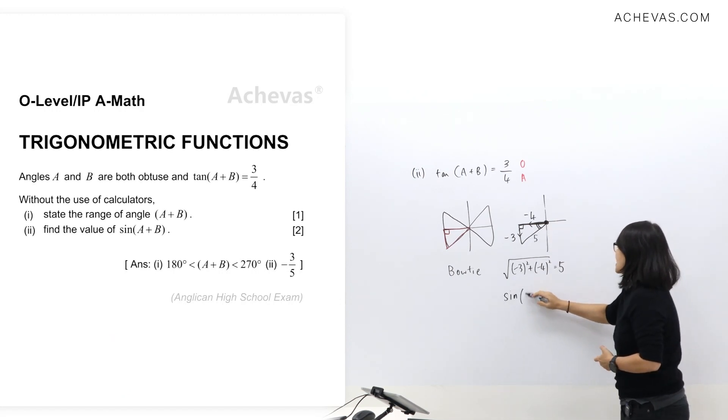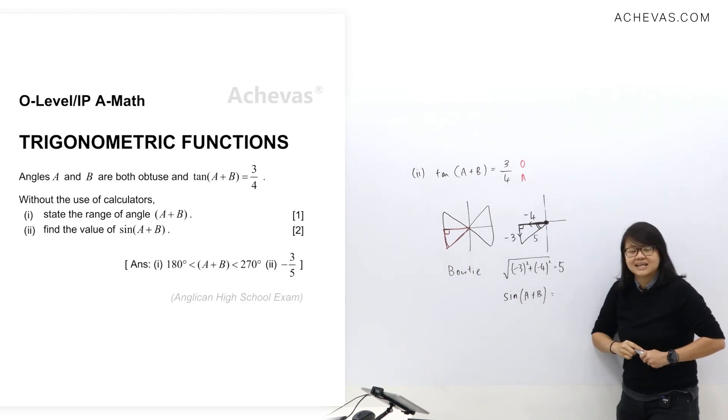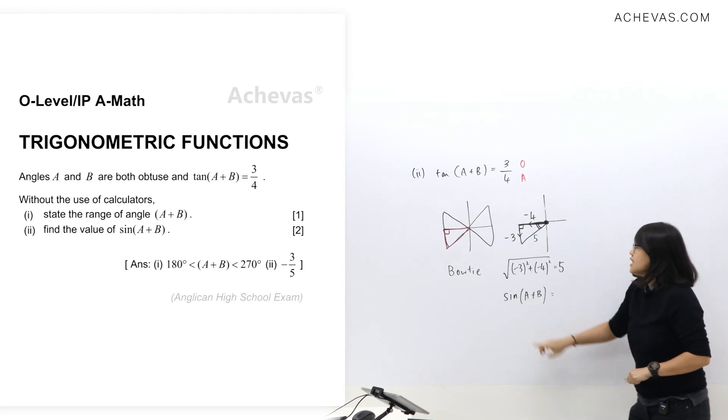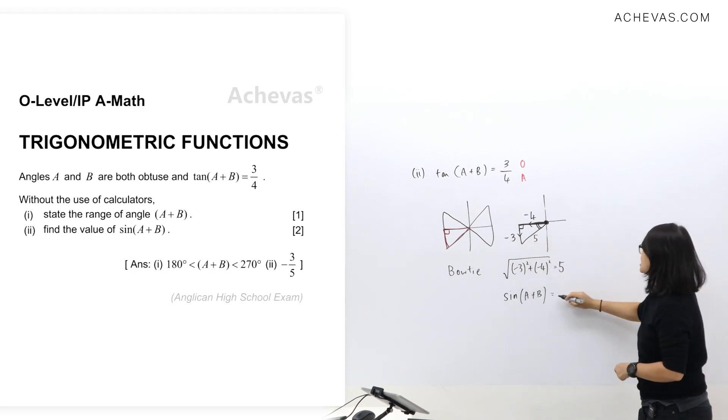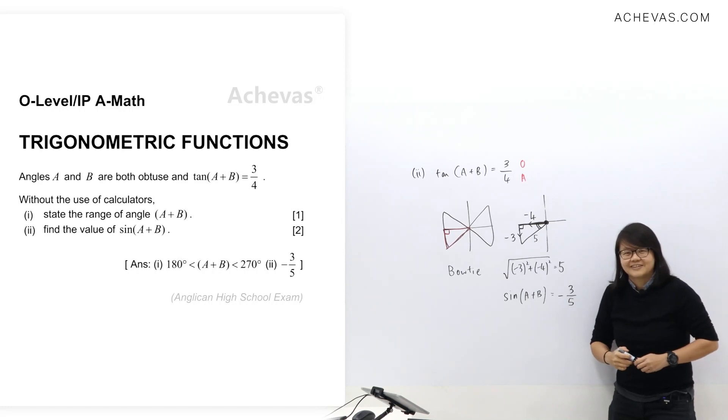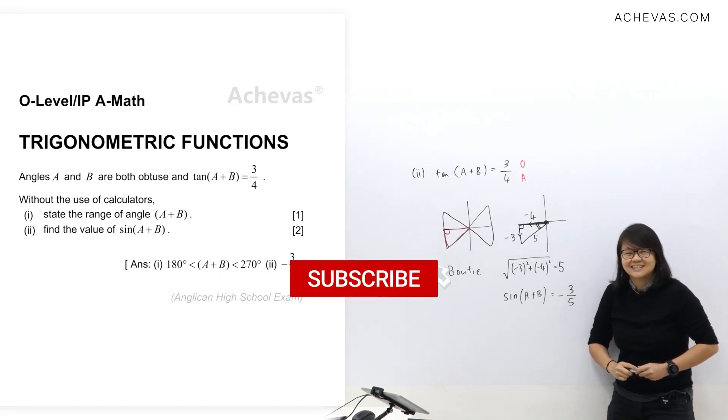Next, I'm going to write down the value of sine A plus B now. So for this one here, we're taking SOH, so it's going to be opposite over hypotenuse. Opposite is going to be negative 3, hypotenuse is going to be 5. So answer will be negative 3 over 5. So that's all for this question.